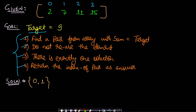We should return the index of the pair as the answer. In the example, there is only one pair: 2 and 7, where the sum equals the target which is 9. So we return 0 comma 1, the corresponding indices of 2 and 7. The indices can be returned in any order — 0 comma 1 or 1 comma 0 are both correct.